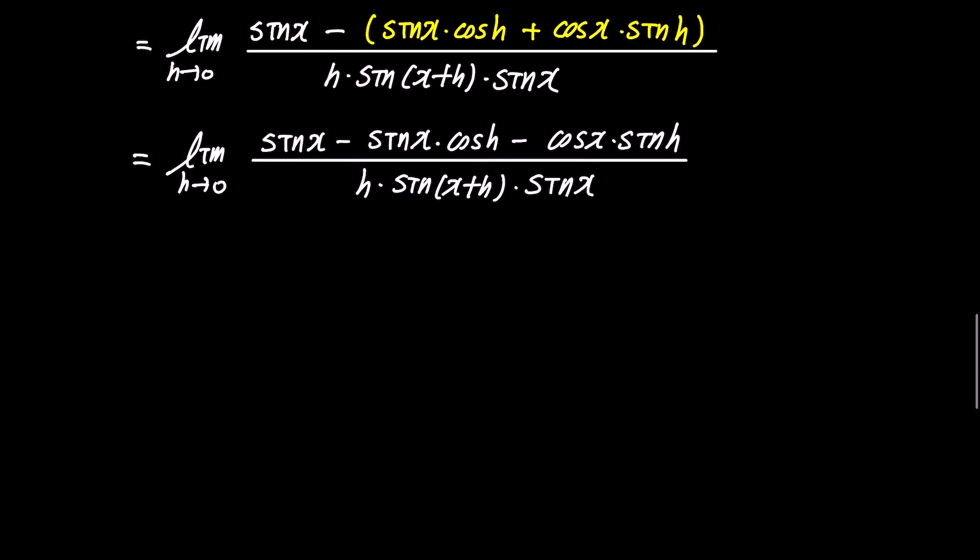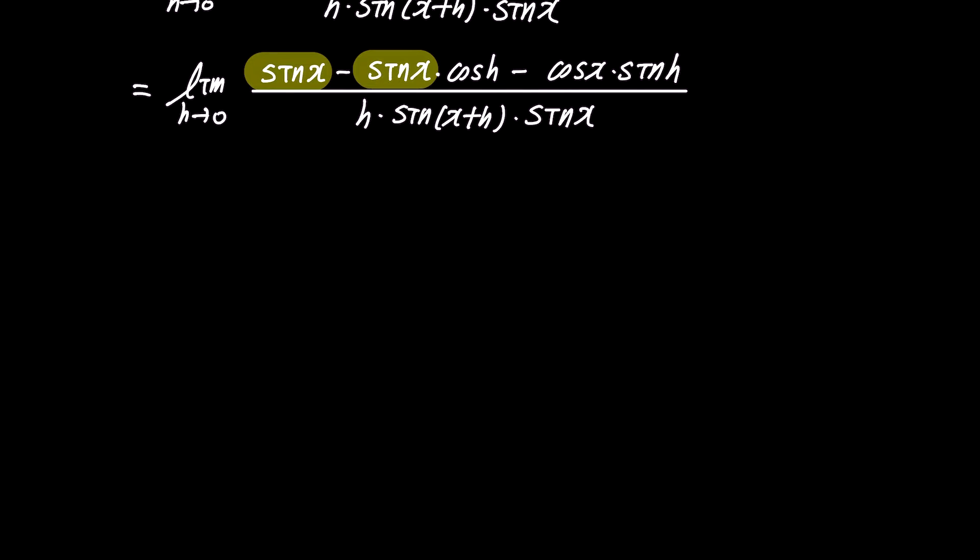Looking at the terms in the numerator, we see a common factor of sin x. Factoring out sin x, we get the limit of sin x times 1 minus cos h minus cos x times sin h, over h times sin x plus h times sin x.